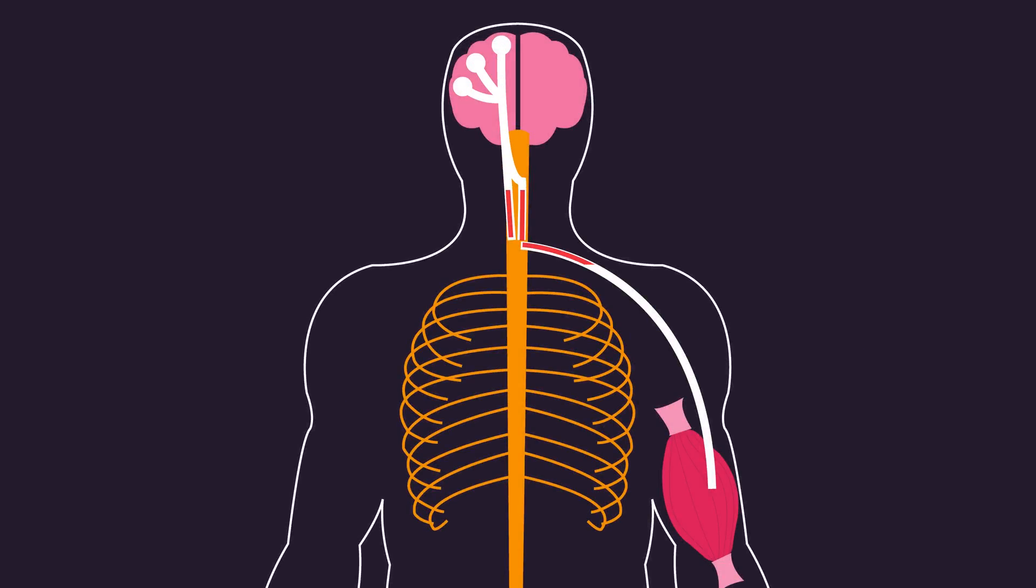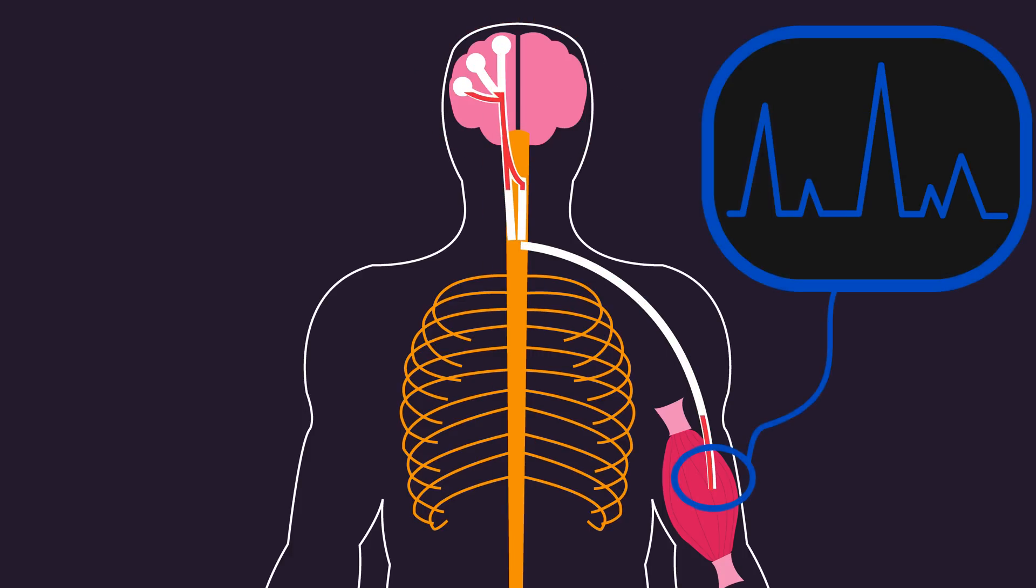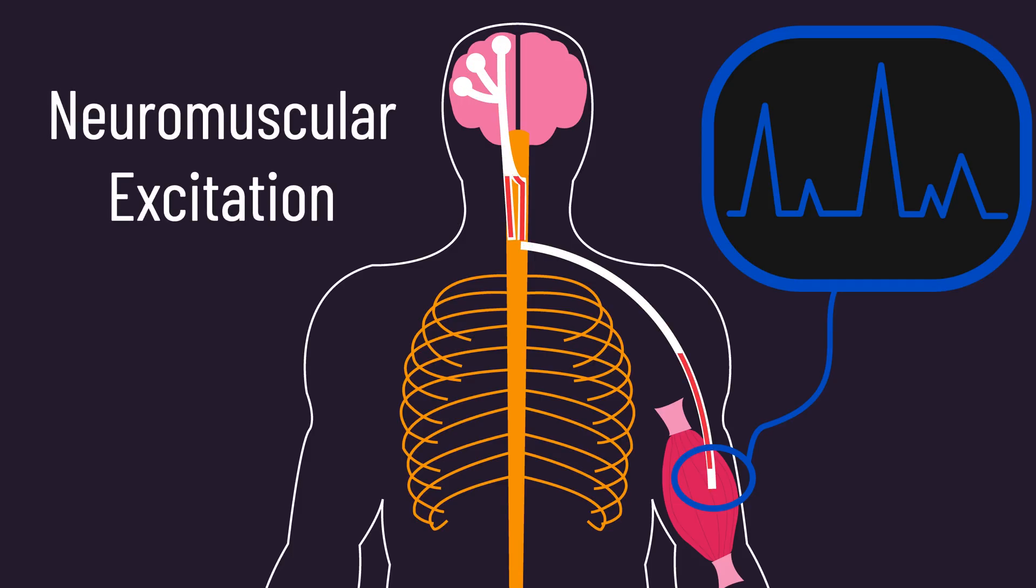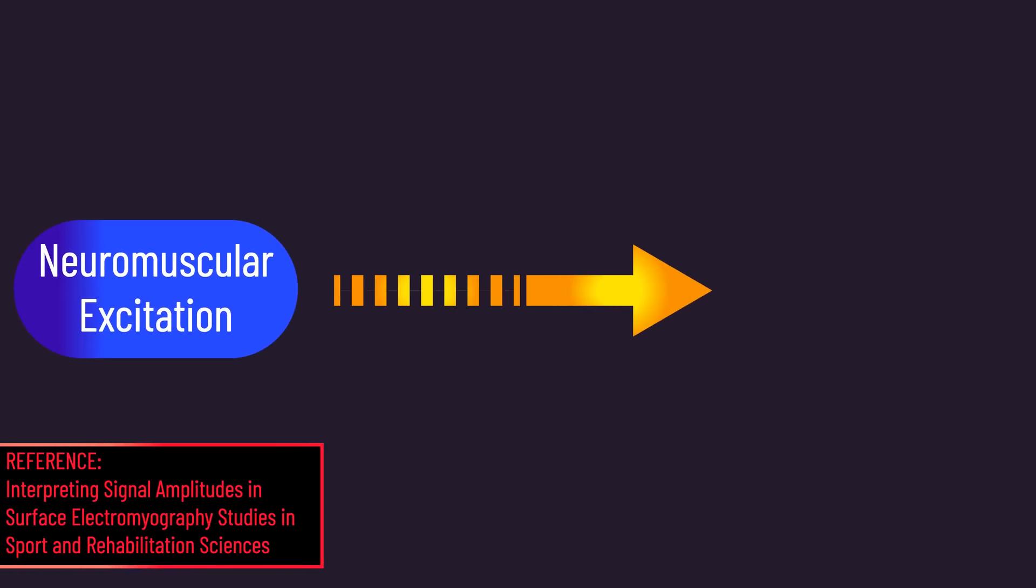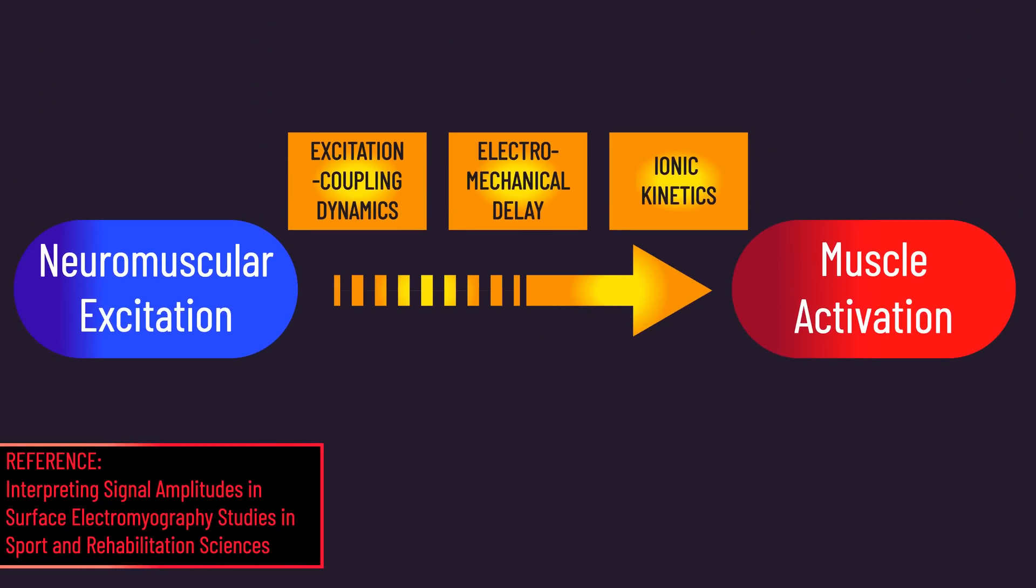Remember, the reason a muscle activates in the first place is that it receives electrical signals from the brain and spinal cord. EMG measures the strength of these electrical nerve signals delivered to the muscle. The term for this is neuromuscular excitation. Now, neuromuscular excitation comes before muscle activation, but there are some steps between them, meaning there isn't always a one-to-one relationship between neuromuscular excitation and muscle activation.